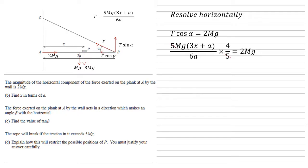Now canceling out the fives top and bottom, and the Mgs that we have on both sides, we can simplify quite a bit. We've got 3X plus A all over 6A times by four equals 2. Multiplying by 6A gives us four lots of 3X plus A equals 12A. Dividing by four, 3X plus A equals 3A. Taking that A away from both sides gives us 3X equals 2A. And finally, dividing by three gives us that X is equal to 2A over 3.